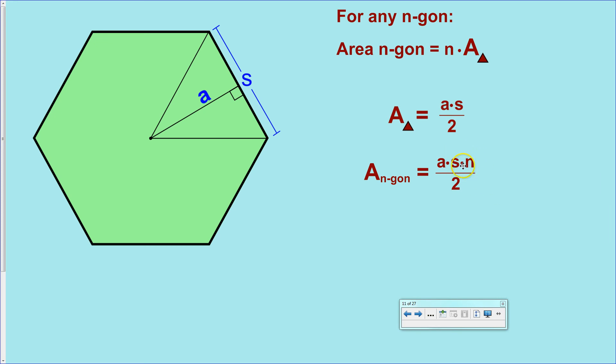This s times n, this is a side length times the number of sides. And, in a polygon, in a regular polygon, that will be the perimeter of the polygon. So, this is a pretty common way to do it, and this is a pretty common way to state the same formula for finding the area of a polygon.